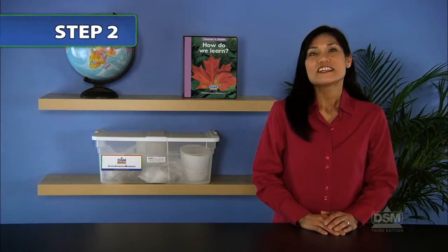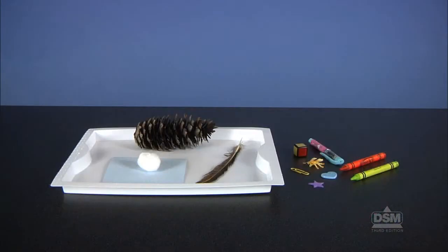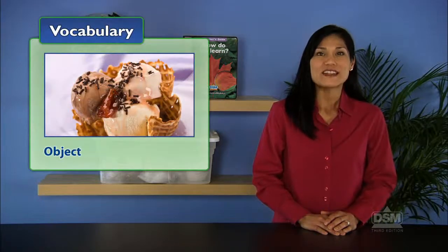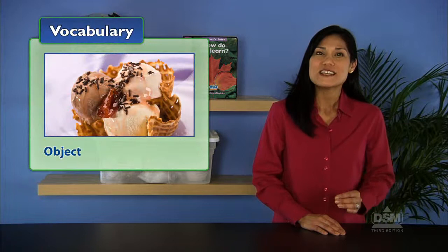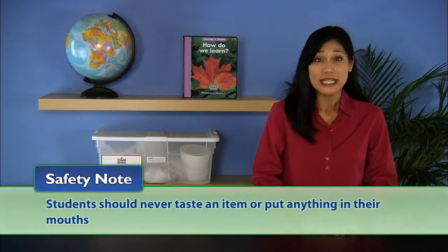Distribute a tray of objects to each team and give them time to explore the objects. Define the word "object" for the class as a thing we can see or touch. Let students know they can handle the objects any way they wish, but they should never taste an item or put anything in their mouths in science class unless instructed to do so by the teacher.